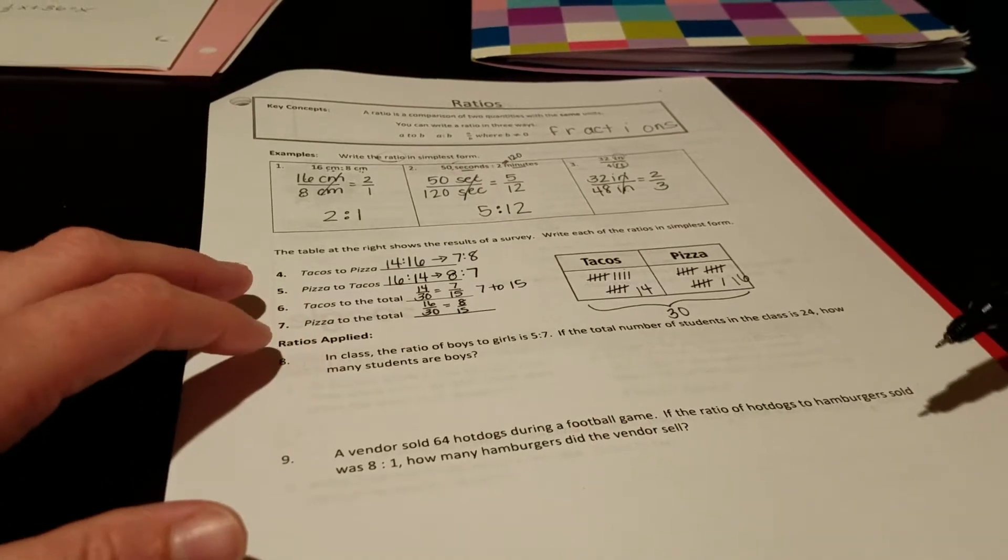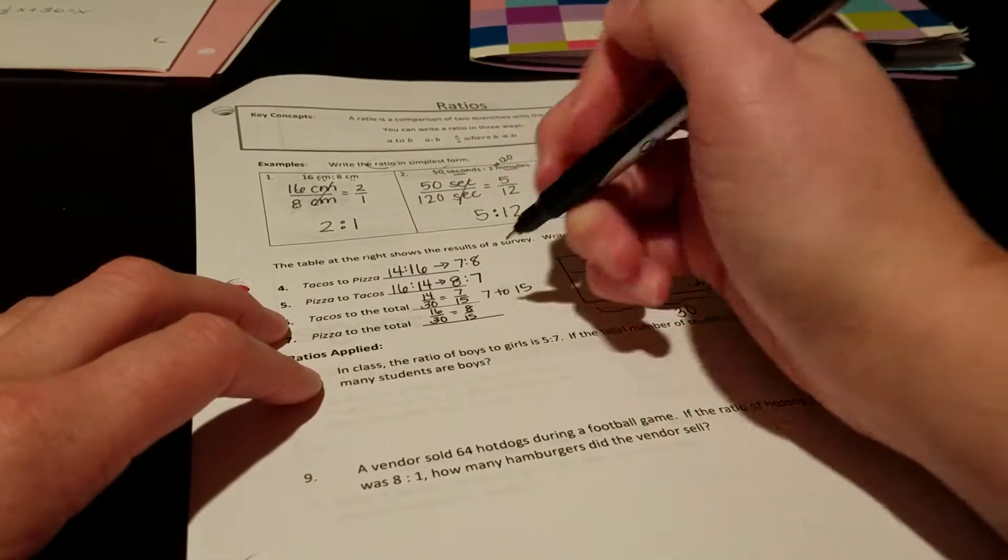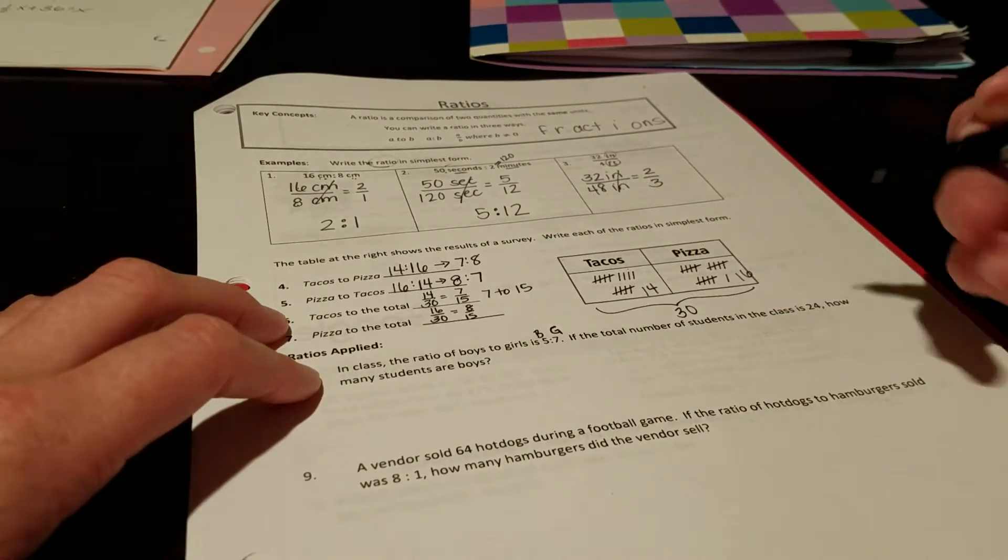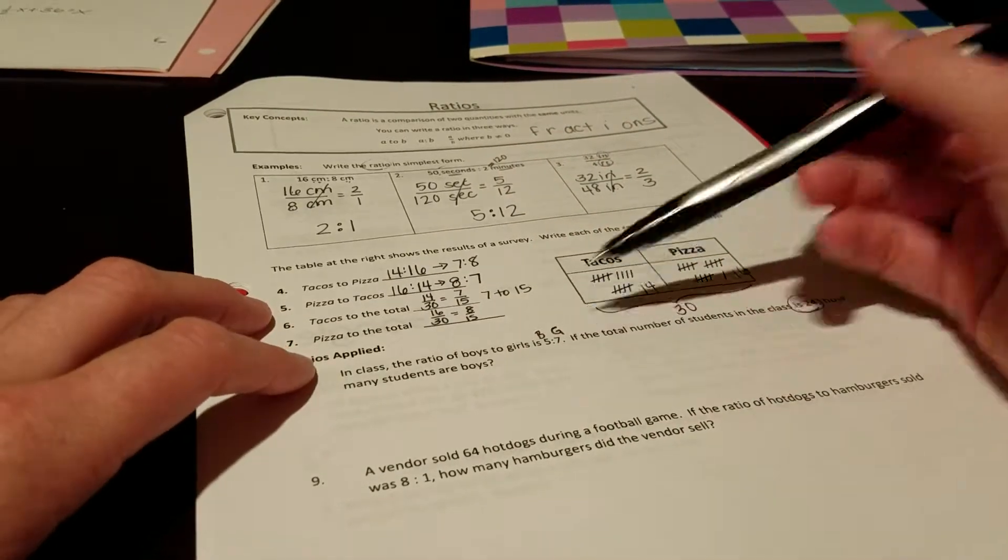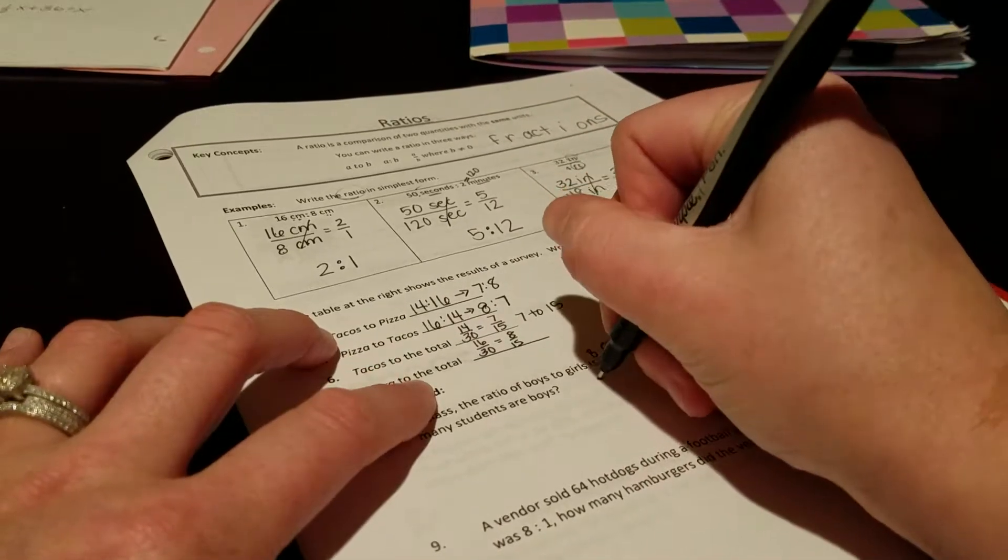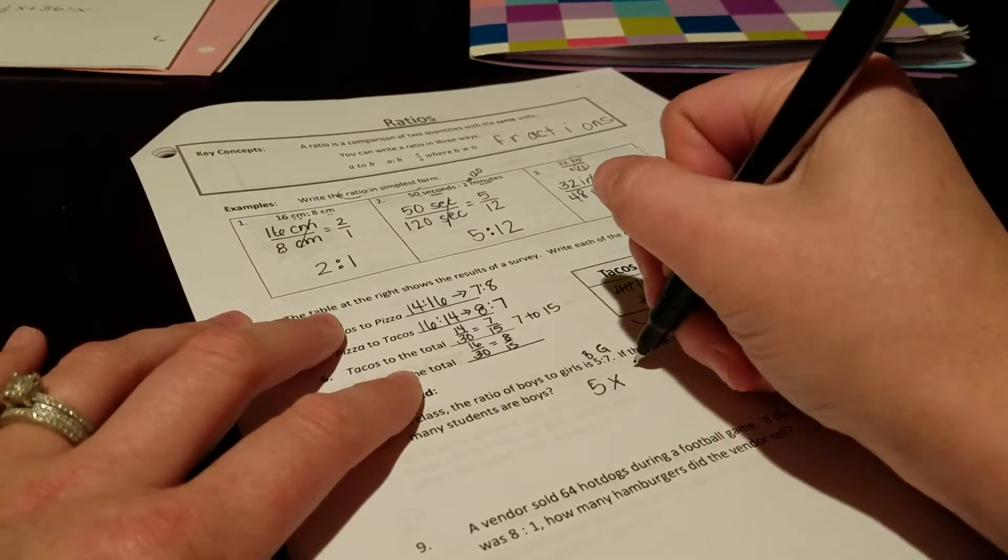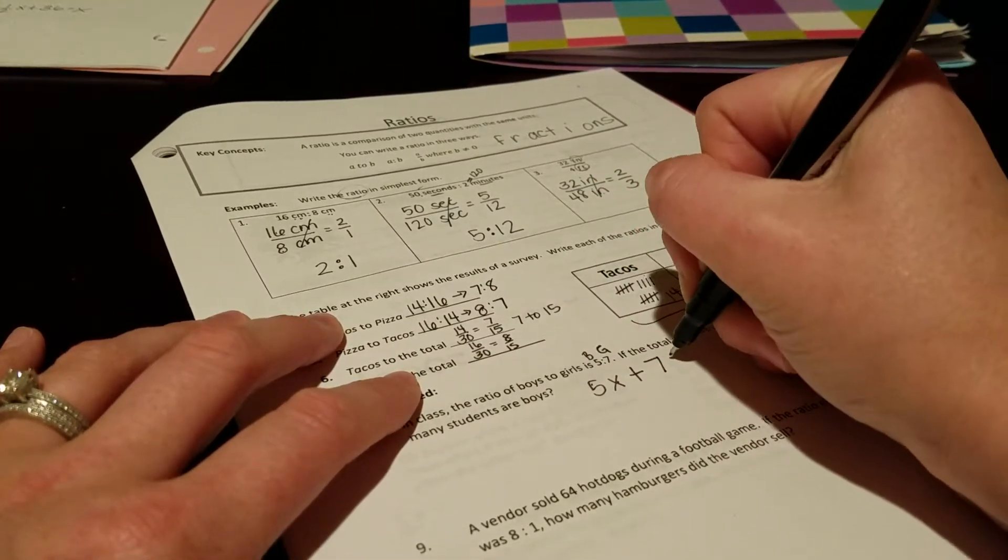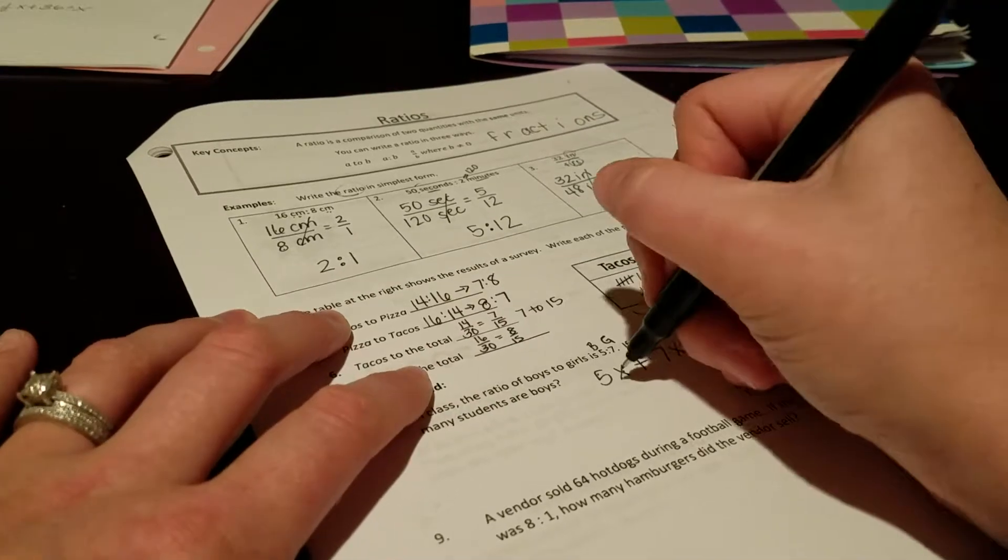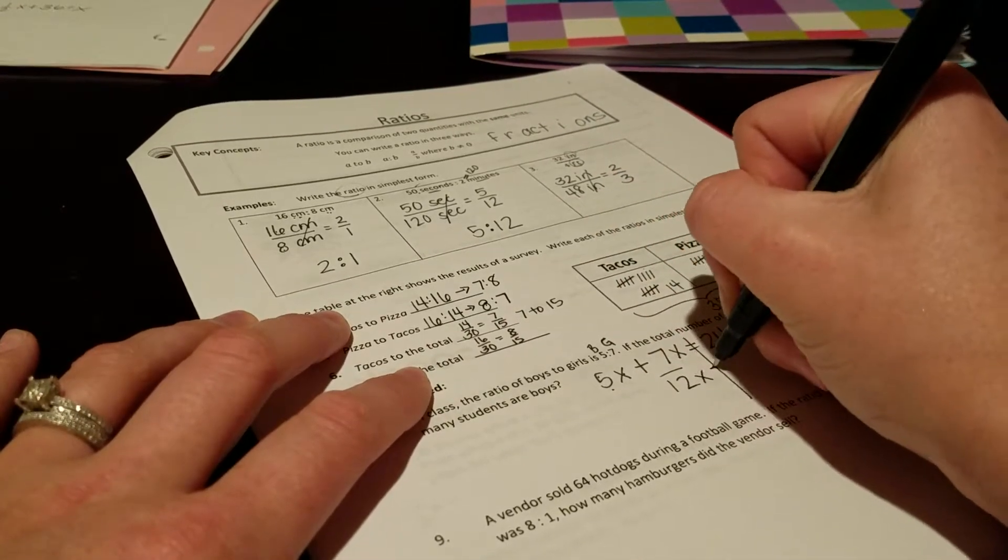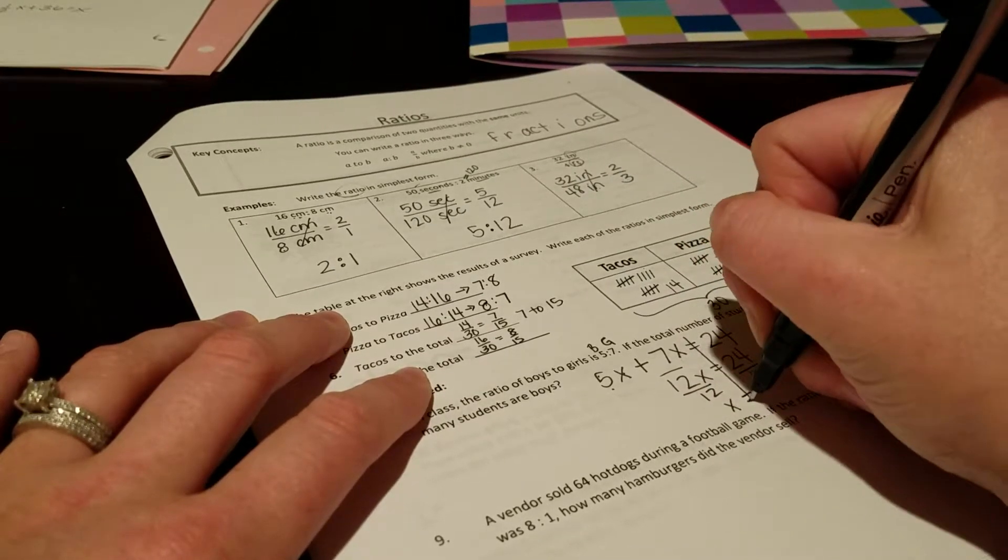These are where applications actually come in. In a class, the ratio of boys to girls is 5 to 7. So 5 boys to 7 girls. If the total number of students in the class is 24, how many students are boys? So when we're given a ratio and we're given a total, we can actually write an equation. So 5 is the number of boys times x. 7 is the number of girls times x. And that's going to equal up to be 24 kids in the class. So 5x plus 7x is 12x equals 24. Divide by 12, x equals 2.